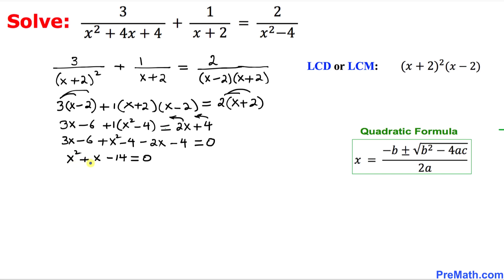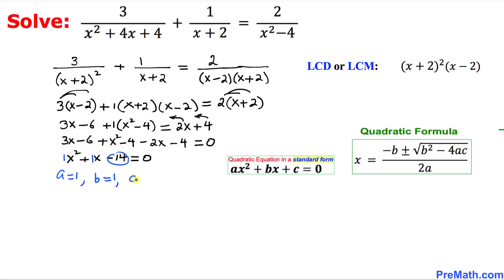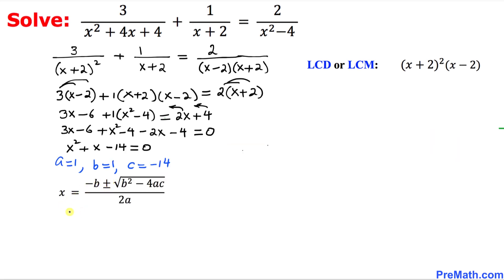We have a quadratic equation and we are going to solve it using the quadratic formula shown on the right hand side. Comparing x² + x − 14 = 0 with the standard form ax² + bx + c = 0, we identify a = 1, b = 1, and c = −14. Plugging into the quadratic formula: x = (−b ± √(b² − 4ac)) / (2a), which gives x = (−1 ± √(1² − 4(1)(−14))) / (2 × 1).